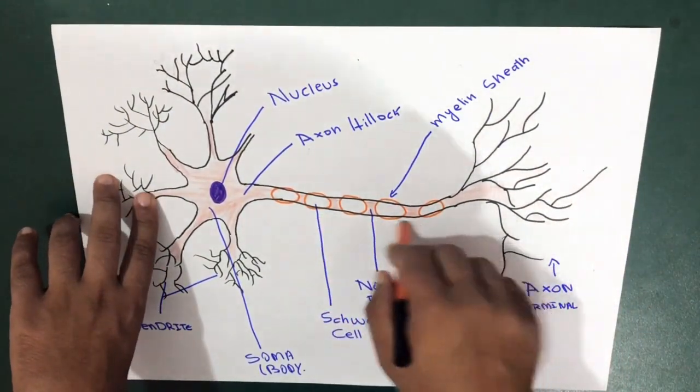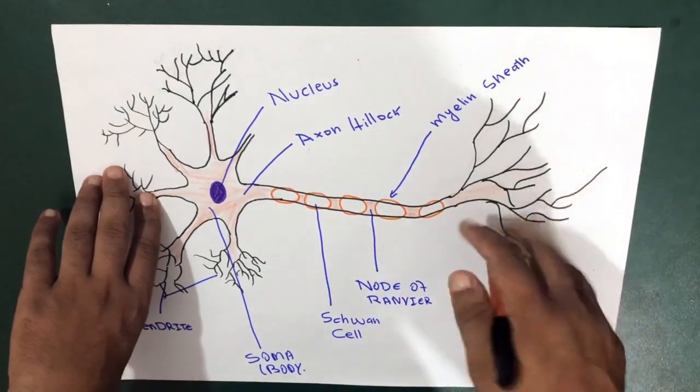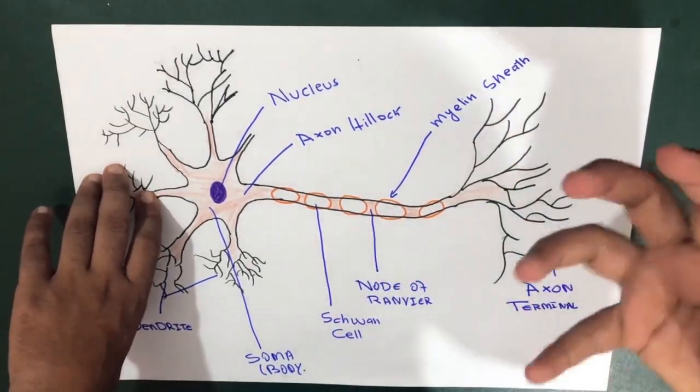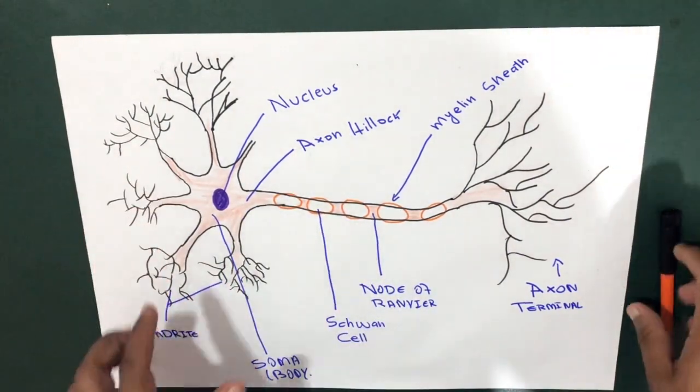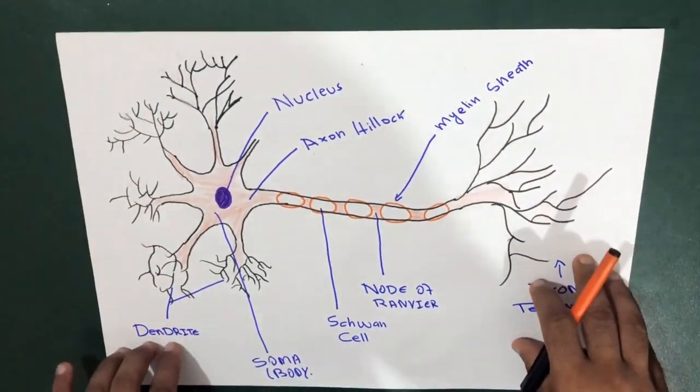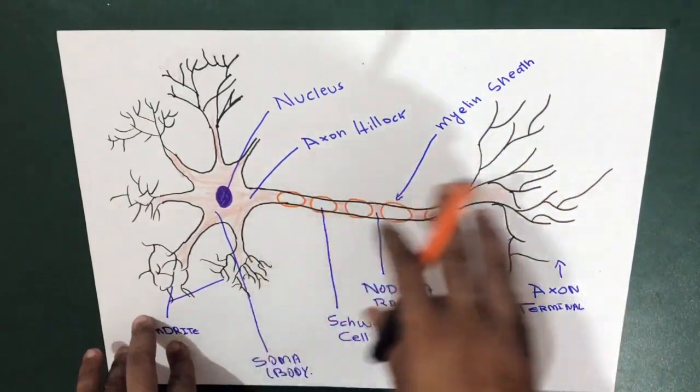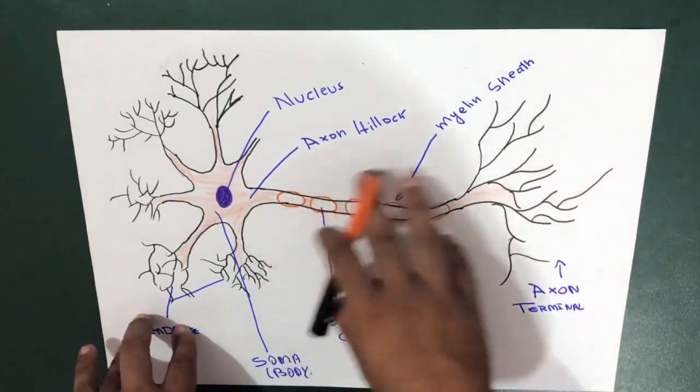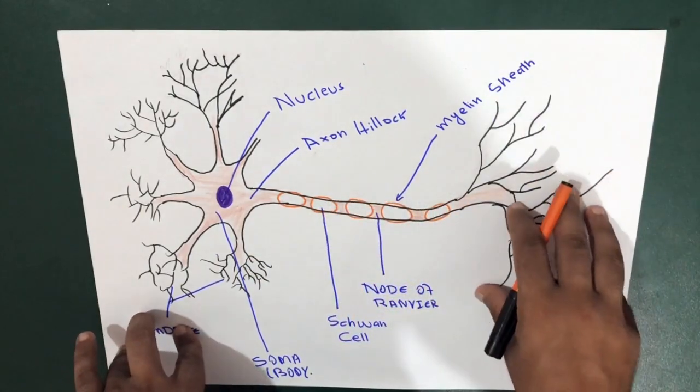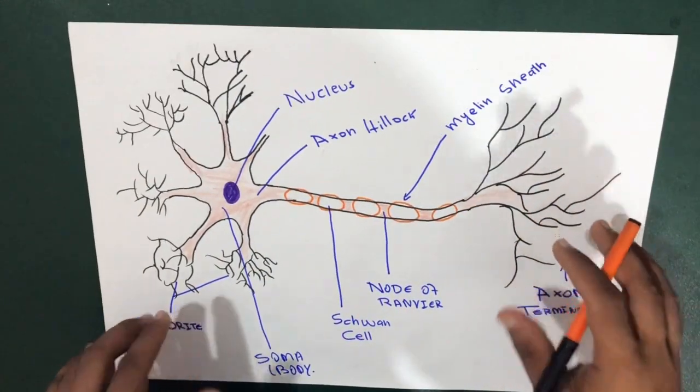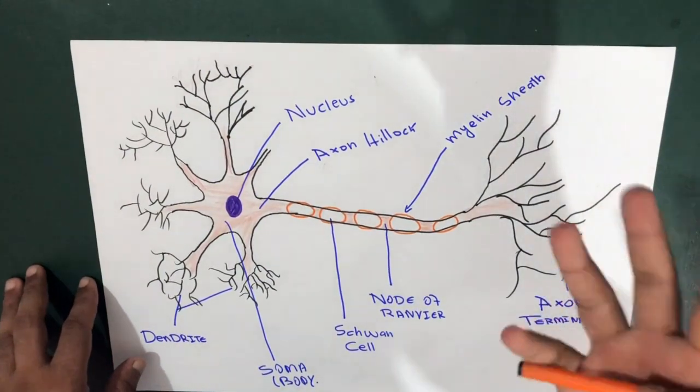These neurons actually pass information through electric impulses. In a human brain, there are about 86 billion neuron cells. And how do they survive? Who helps them? These neurons are actually supported by the glial cells, which is another group of cells.